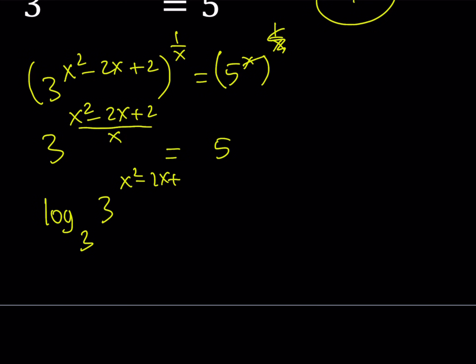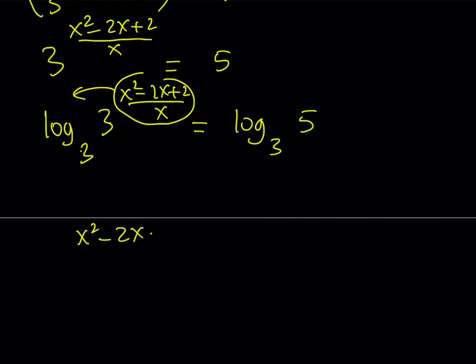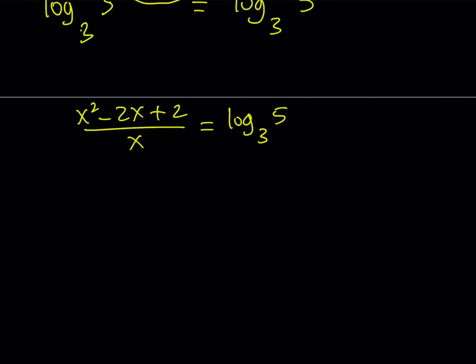Or you can just directly use the definition of logs, which is going to give you pretty much the same thing. Okay, great. So now I can move this stuff to the front and log 3 with base 3 is going to be 1. So this gives me x squared minus 2x plus 2 over x is equal to log base 3 of 5.